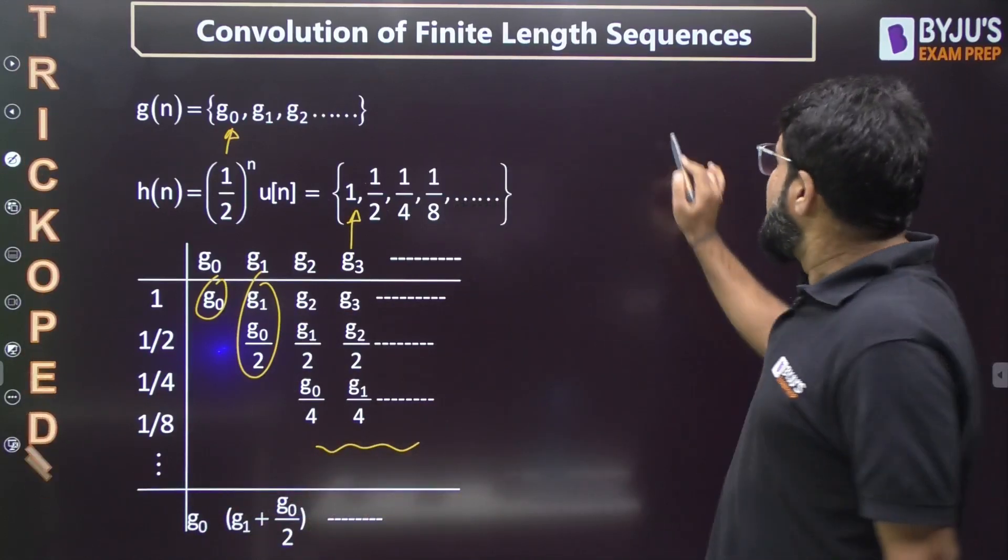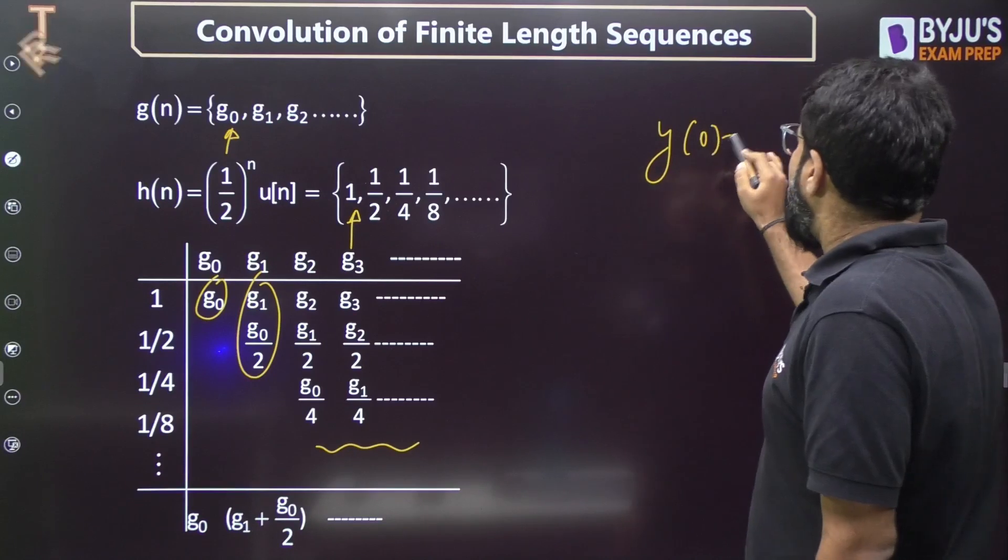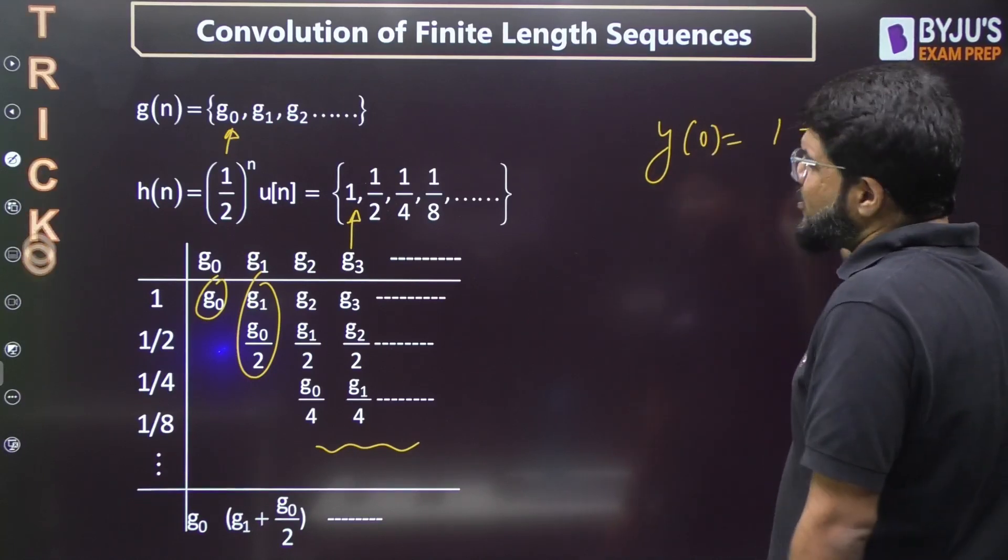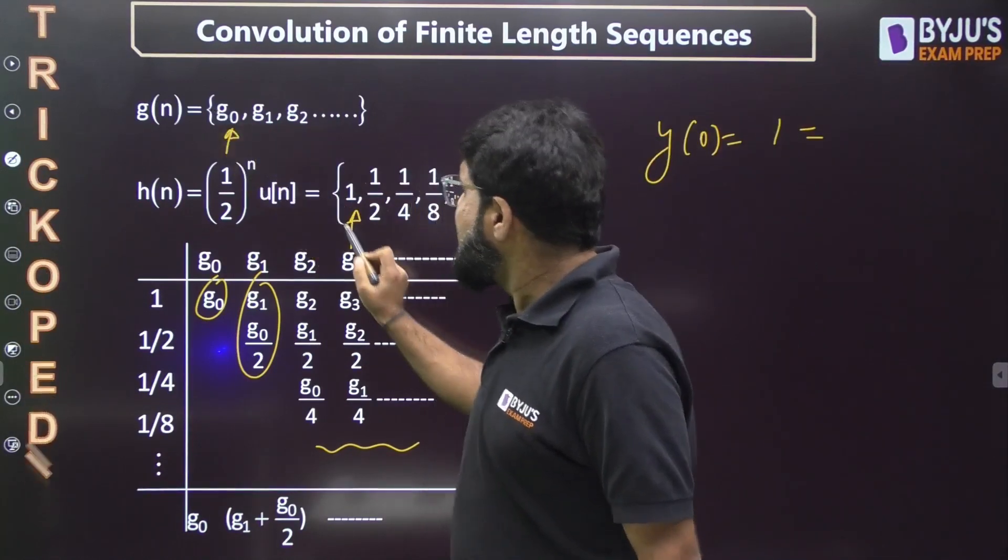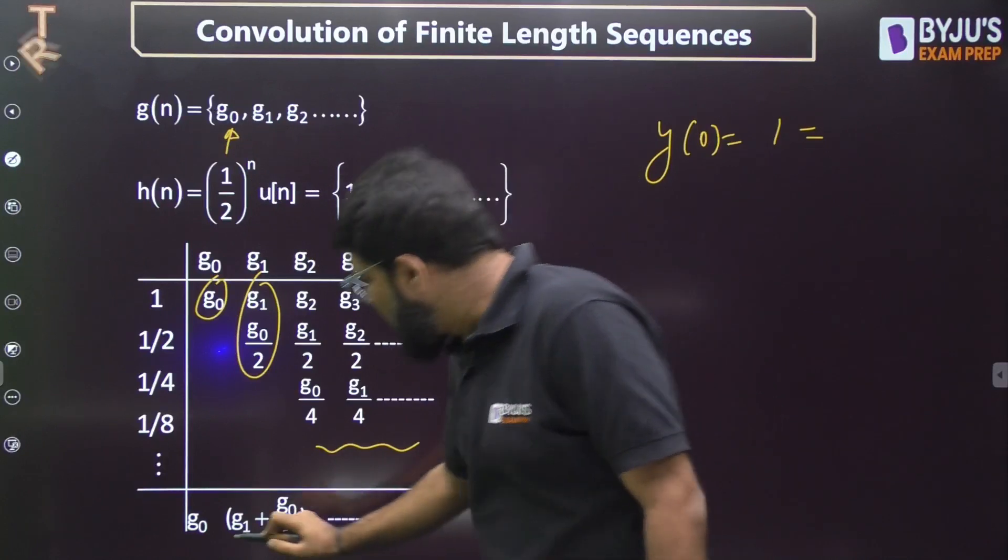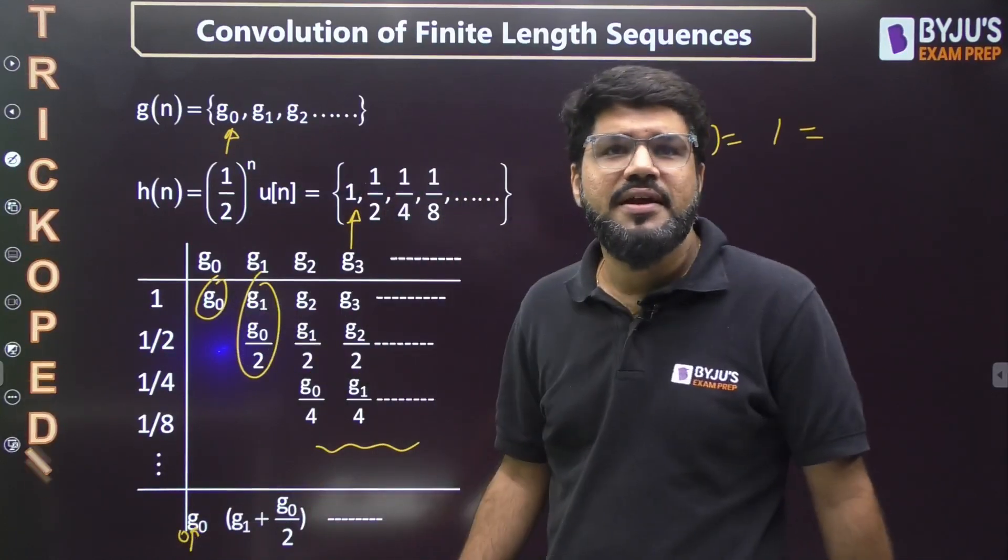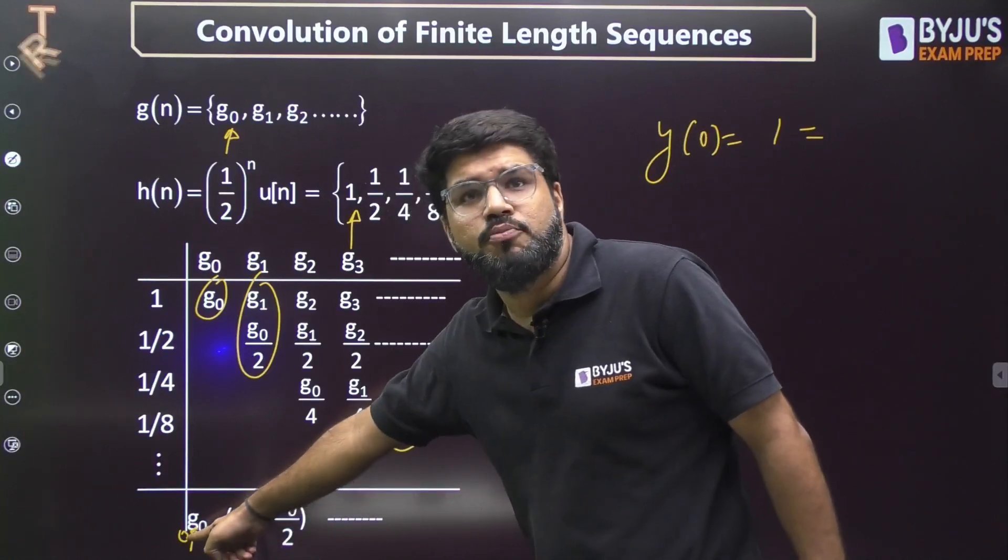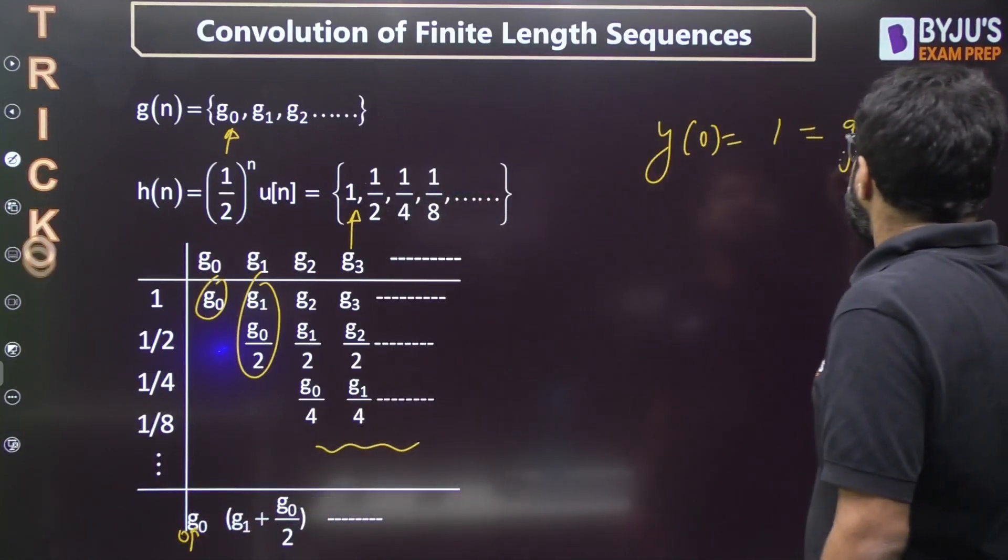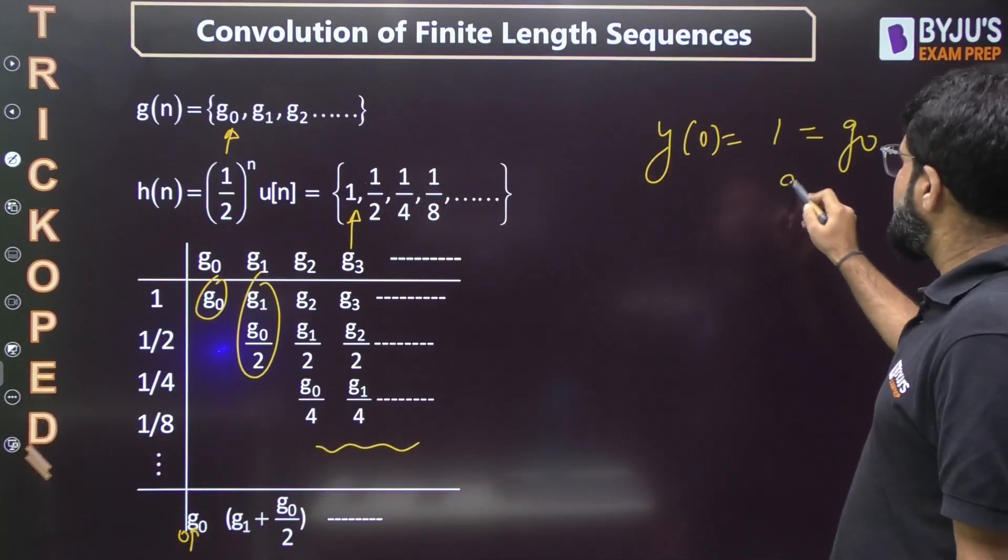Multiply by 1, then multiply by 1/2, multiply by 1/4, etc. Now do the sum by column. Add these elements: first is g[0], next is g[1] plus g[0]/2, next etc. Now, in the question, y[0] is given to you as 1. h[n] and x[n] both starting from origin, so this will also be starting from origin. This is the first value of the output, y[0]. So y[0] equals 1, that is equal to g[0], so g[0] is also 1.